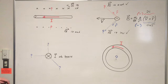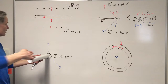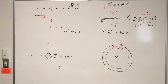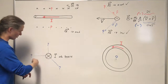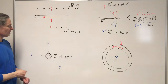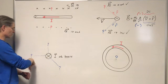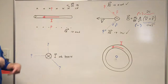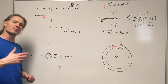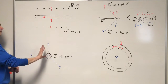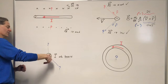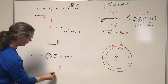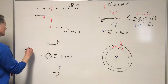On to the next example. We're now considering a current into the board. This little x means we're looking at the tail feathers of the current vector, which is going into the board. We know magnetic fields basically make circles around the currents that produce them. The question is: does it go this way, or does it go that way? The right-hand rule tells us which way. We use our derived right-hand rule for the directions of magnetic fields produced by currents: stick the thumb of your right hand in the direction of the current, fingers wrap around in the direction the magnetic field must be pointing. So up here the magnetic field is this way, right here it's this way, and right here it's that way.